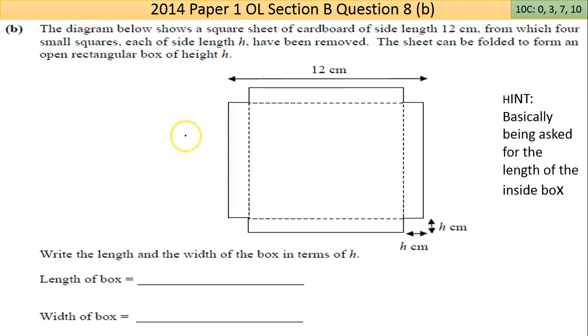Now Part B. The diagram below shows a square sheet of cardboard of side length 12 centimeters, from which four small squares each of side h have been removed. That's h all the way around, that's the final h down there.